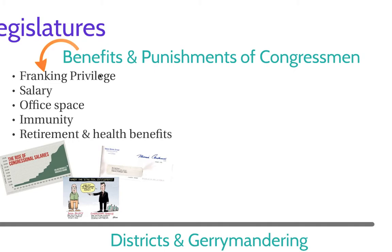Congressmen have immunity. So if they break a law, they are immune from it until they are no longer in session. That is a very big privilege, and if a congressperson broke a law that was too big, they would be punished — we'll talk about punishments in just a second. However, they do have immunity from crimes.